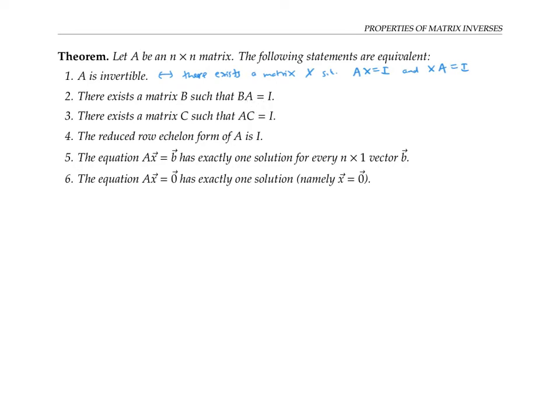But it turns out that having B times A equals I for square matrices also implies that A times B has to equal I. And so if statement two is true, then statement one is also true.